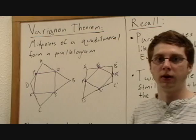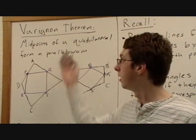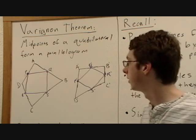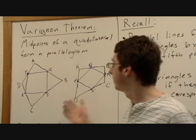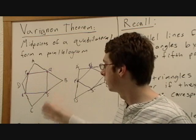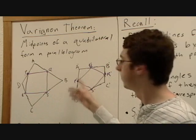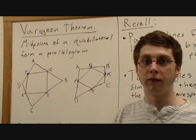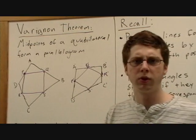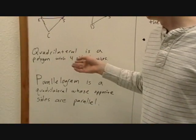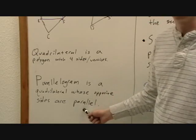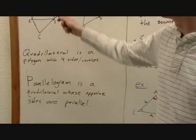Now that we know about Varignon himself and his theorem, we can go on to prove it. We're going to prove Varignon's Theorem right here — it states that midpoints of a quadrilateral form a parallelogram. Here are two pre-drawn quadrilaterals for convenience. They're both a little differently shaped, and you can see that when we draw P, Q, R, and S as midpoints of this quadrilateral, they kind of both look like parallelograms, but that's not enough — we're going to have to prove that. A quadrilateral is a polygon with four sides and four vertices, and a parallelogram is a quadrilateral whose opposite sides are parallel, and this is what we're going to want to prove.